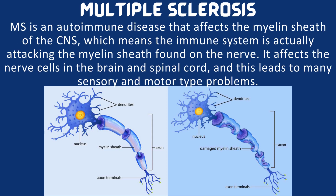MS is an autoimmune disease that affects the myelin sheath of the CNS, which means the immune system is actually attacking the myelin sheath found on the nerve. It affects the nerve cells in the brain and spinal cord and this leads to many sensory and motor type problems.